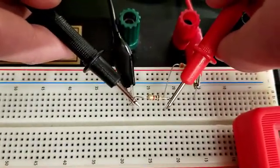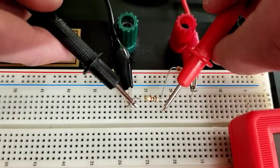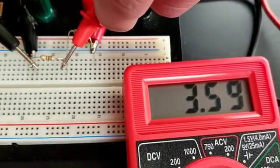The second resistor, again you touch before and after the resistor, and it reads 3.59 volts.